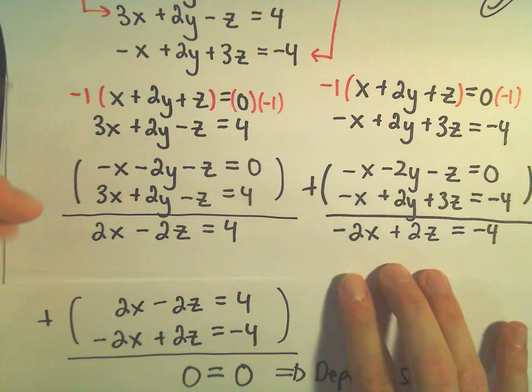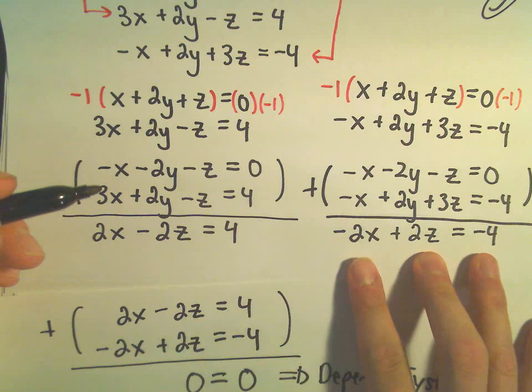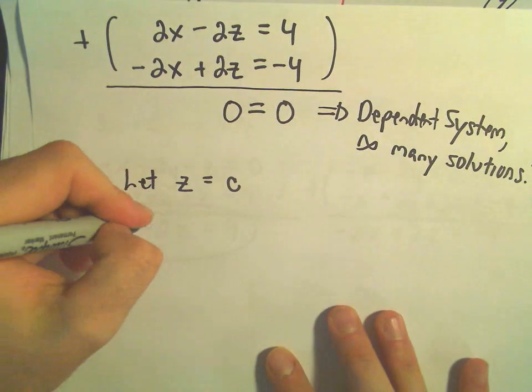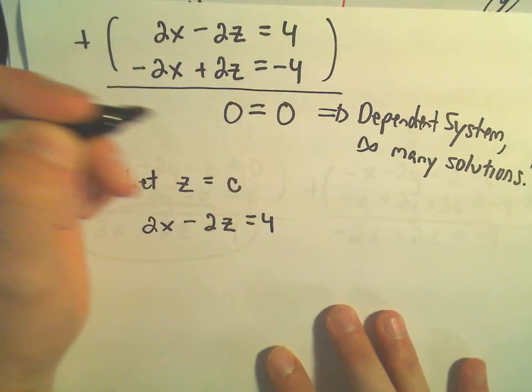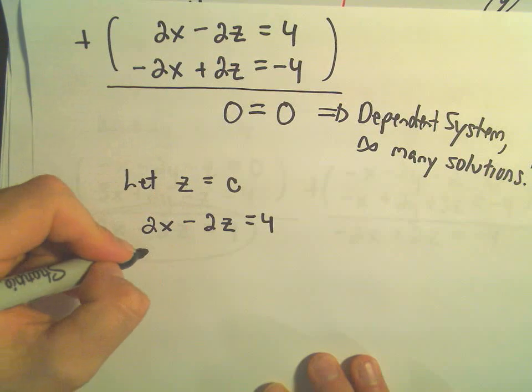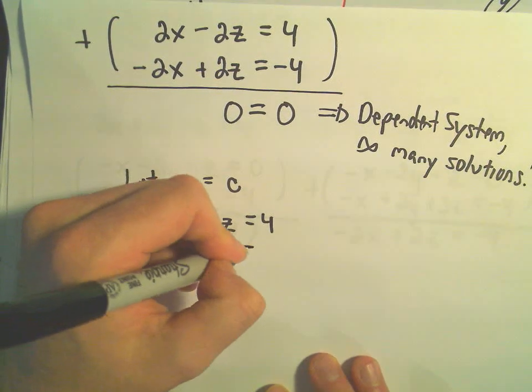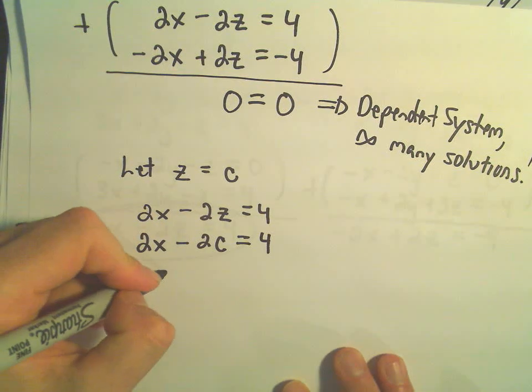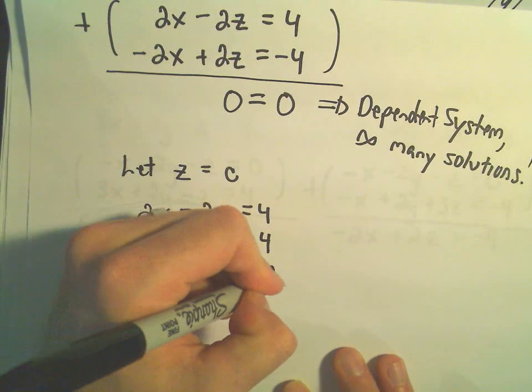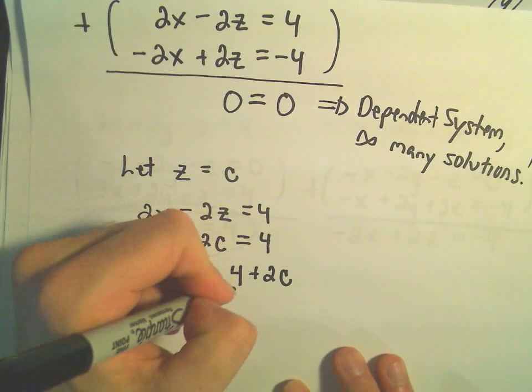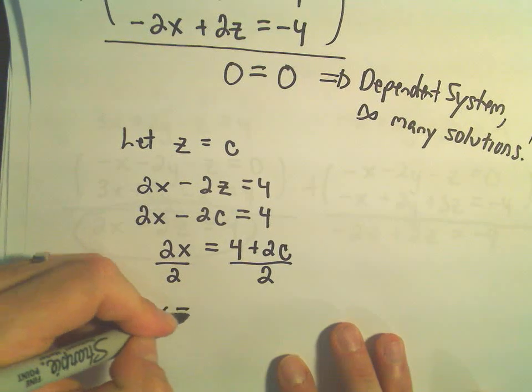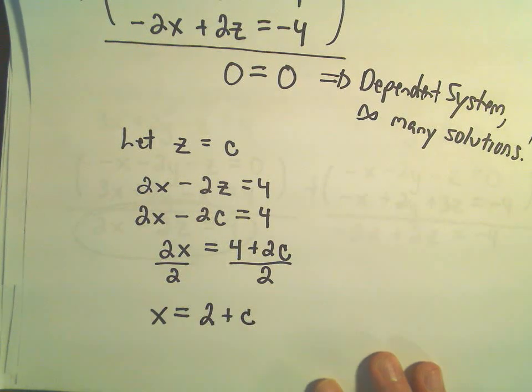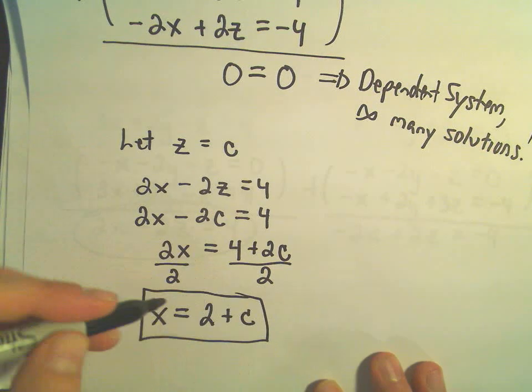So what do I mean there? Well, again, we had these two equations. 2x minus 2z equals 4 and negative 2x plus 2z equals negative 4. Just use one of those. I'm going to use the first one. Okay, so we have 2x minus 2z equals 4. Well, if we let z equal this constant, c, we would have 2x minus 2 times c equals 4. And what we're going to do now is we're just going to take this equation and solve for x. So I could add 2c to both sides. That would give me 4 plus 2c. And then to solve for x, I would divide by 2. I would get x equals, again, we can break up this fraction as 4 over 2, which would be 2, plus 2c over 2, which would just give us 1c. So now I've got my solution for x in terms of this constant.